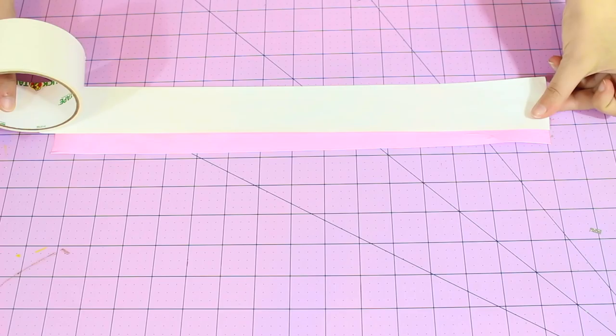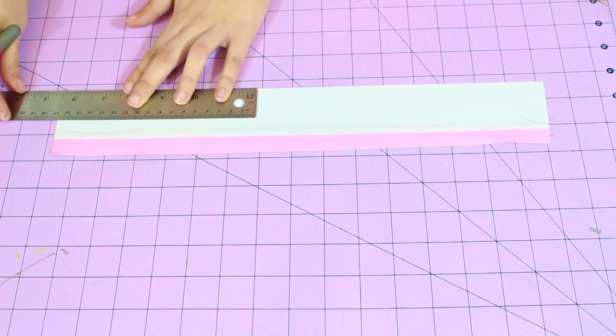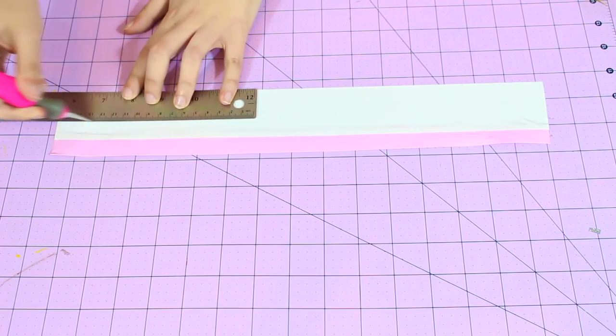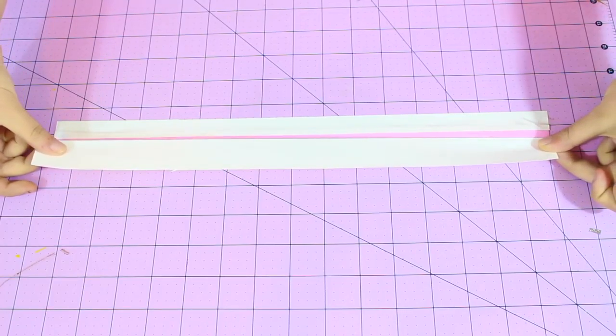Now I'm taking my white and I'm just going to put an outline on this, and then I'm just cutting this off and using it on this side.